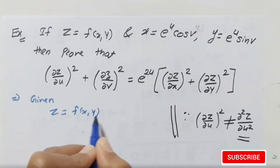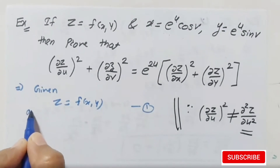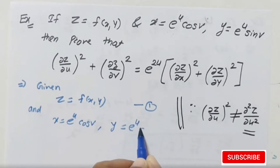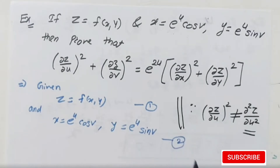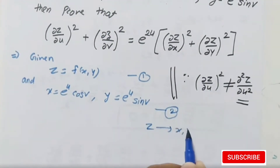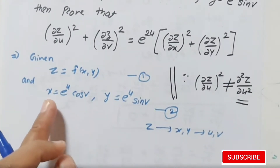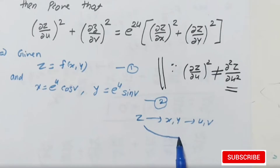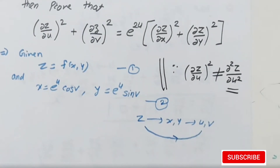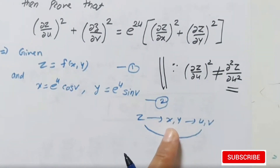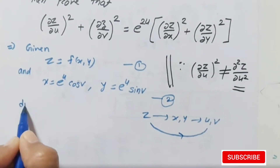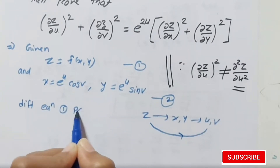From the given, z = f(x, y) — call this equation (1). And x = e^u·cos(v), y = e^u·sin(v) — call this equation (2). So z is a function of xy, and xy are functions of uv. We have to find the derivative of z partially with respect to u, because indirectly z is a composite function of uv.